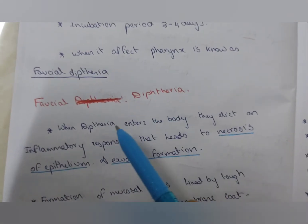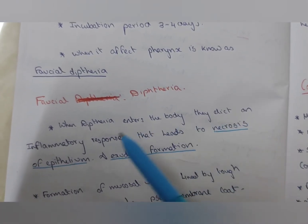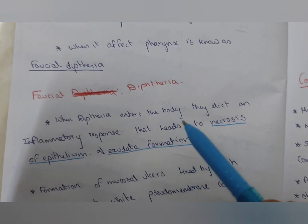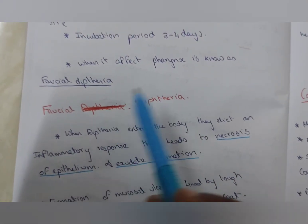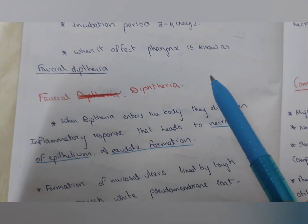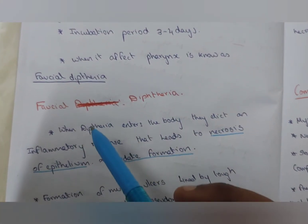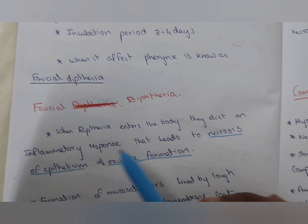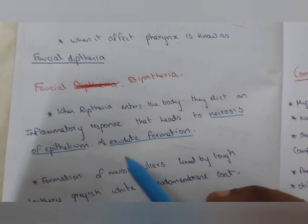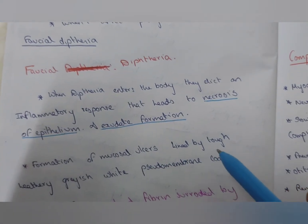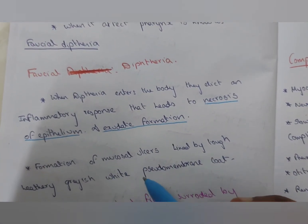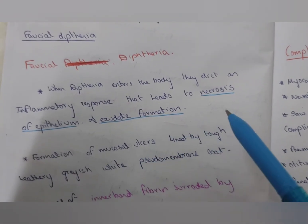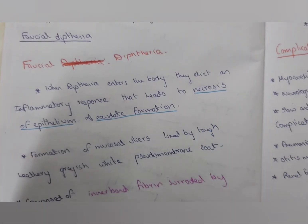When the diphtheria enters the body, it elicits an inflammatory response that leads to necrosis of the epithelium and exudate formation. Always the diphtheria's main feature is the formation of pseudomembrane coat. When it enters into the body, it elicits an inflammatory response that leads to necrosis of epithelium and exudate formation. The formation of mucosal ulcer lined by tough leathery grayish-white pseudomembrane coat. The pseudomembrane coat is formed here. This indicates the person who is affected by diphtheria.